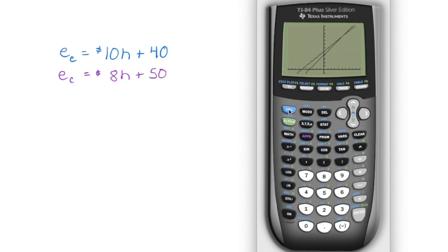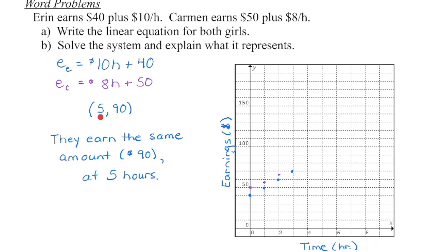Ideally, we want them kind of in the middle of the screen where they're crossing, but as long as we can see them. Okay, that's actually not bad. So I'm going to go now second function trace, number five, we're going to move the cursor over. You can hold yours down. My computer is not quite as cooperative. Okay, so once you're close, we're going to go enter, enter, enter, and there's my solution. So five and 90. Now this five is the number of hours. It's my X coordinate. This 90 is the earnings. That's my Y coordinate. So those two lines will cross at that coordinate point. That means they're going to earn the same amount of money, $90 at five hours of working.